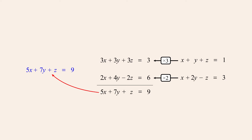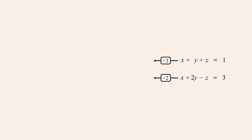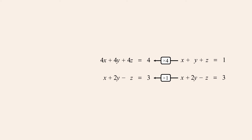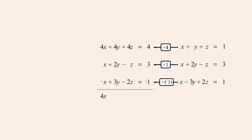Of course, different linear combinations of those two equations could be created by choosing different multipliers. For example, instead of multiplying the top equation by three and the bottom equation by two, if we multiply the top equation by four and the bottom equation by one and then add the results, we get a different equation which is another linear combination of the same two equations. Linear combinations can be made by adding multiples of any number of equations. For instance, we could add a multiple of negative one times a third equation, producing a linear combination of three equations.